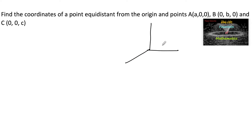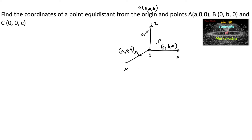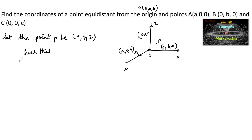There is a point P which is equidistant from the origin O(0, 0, 0), point A on the x-axis (a, 0, 0), point B on the y-axis (0, b, 0), and point C on the z-axis (0, 0, c). Let the point P be (x, y, z) such that the distance from O to P is the same as P to A, and O to P is the same as P to B.